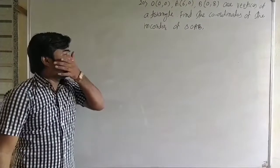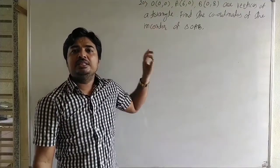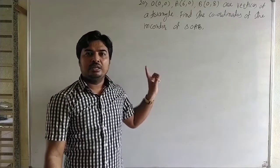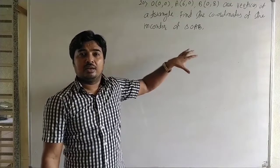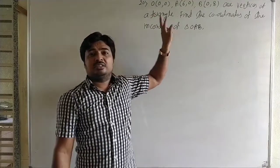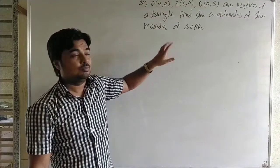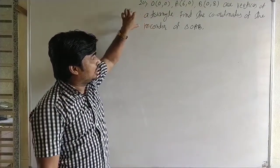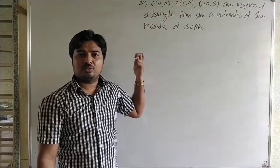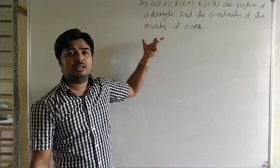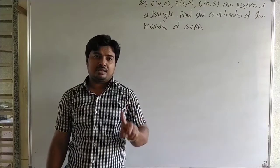Here we want to find the coordinates of the incenter of the triangle. The incenter is the point of intersection of the angle bisectors of the triangle. In a triangle there are three angles, so there are three angle bisectors — this is the point of concurrence. The three angle bisectors intersect at a point called the incenter. We want to find the point of intersection of the angle bisectors.